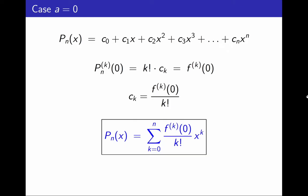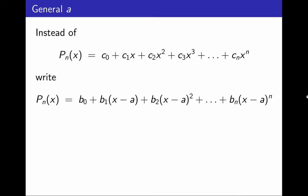Now, this was the case for a equals 0. What about for other values of a? There is a trick to make the calculation simpler. Instead of writing a generic polynomial like this, in terms of powers of x, I can write it like this, in terms of powers of x minus a.